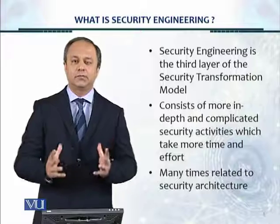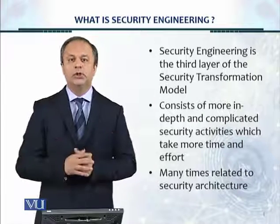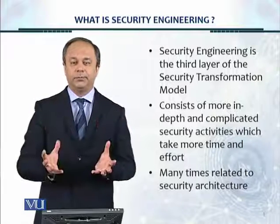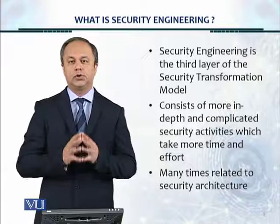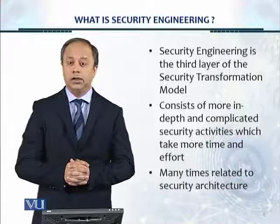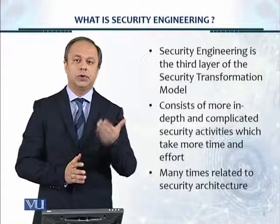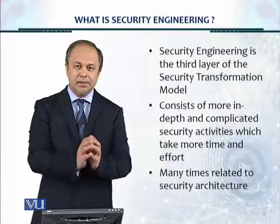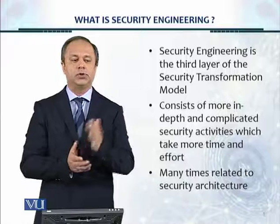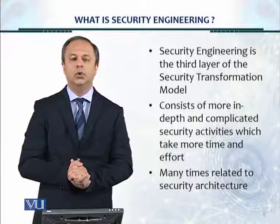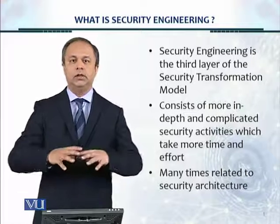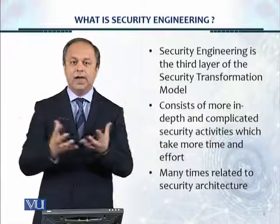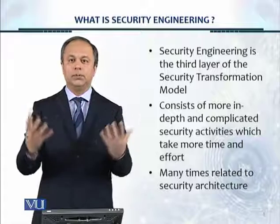This is an excellent framework of 20 controls which looks at the security activities in an aggregate manner. There are actually two ways to look at the security controls. One is security hardening, which is layer one of the security transformation model, which applies security controls in an independent manner on a particular IT asset — for example, on a Windows Server 2012 R2 machine. In the CIS Top 20 Critical Controls, the assets are taken as an aggregate, and there are lots of controls which have to be applied together.